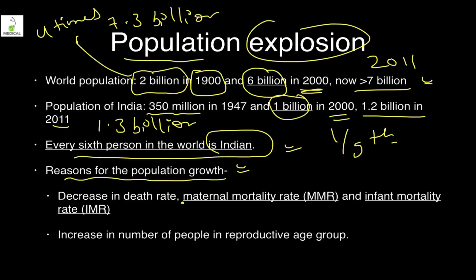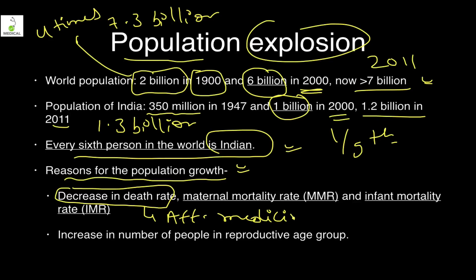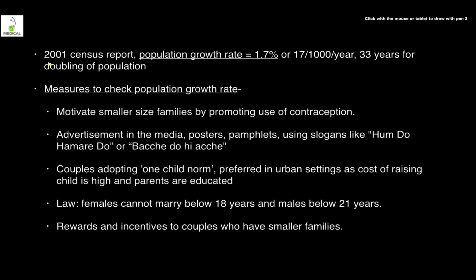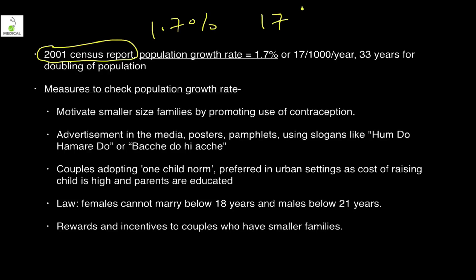Reasons for population growth: the death rate is decreasing due to advances in medical healthcare and affordable medicines, reducing MMR and IMR. However, the people in the reproductive age group are constantly increasing — the demographic dividend — which is why population explosion continues. According to the 2001 census, India grows at a rate of 1.7%, or 17 people per thousand, which means a doubling time of 33 years. But in the 2011 census this growth rate has declined.